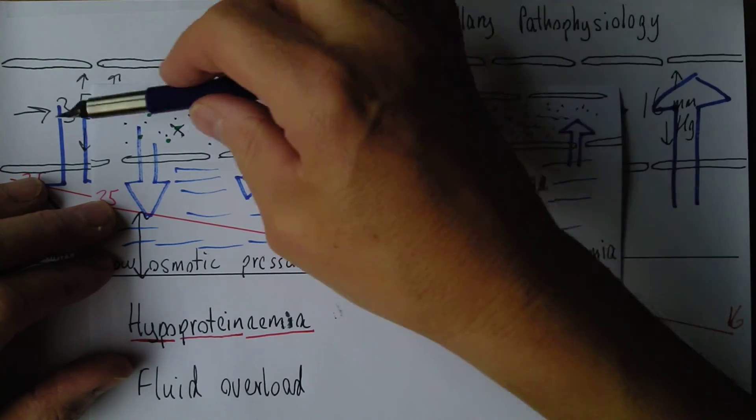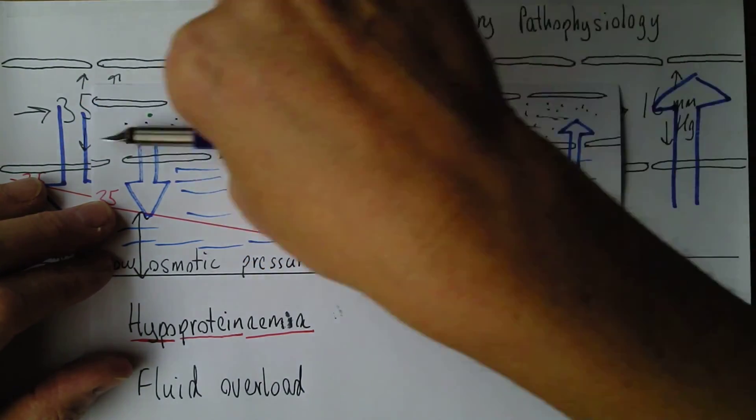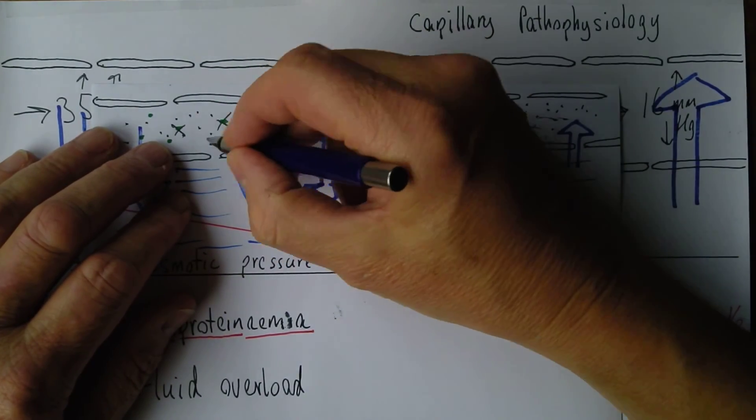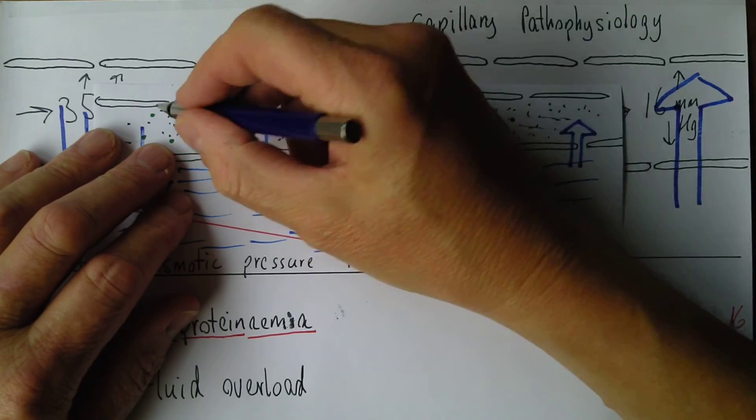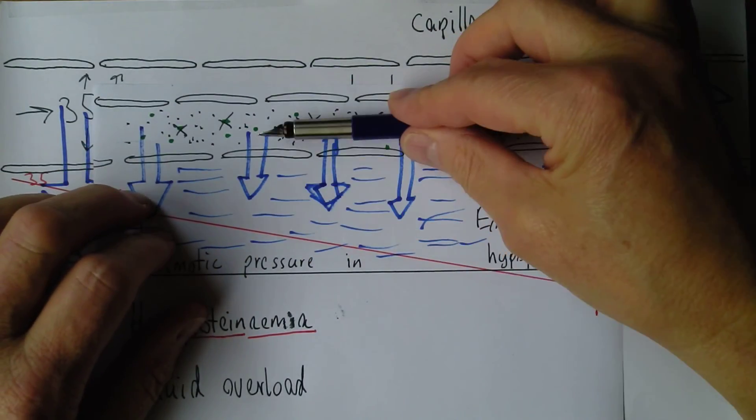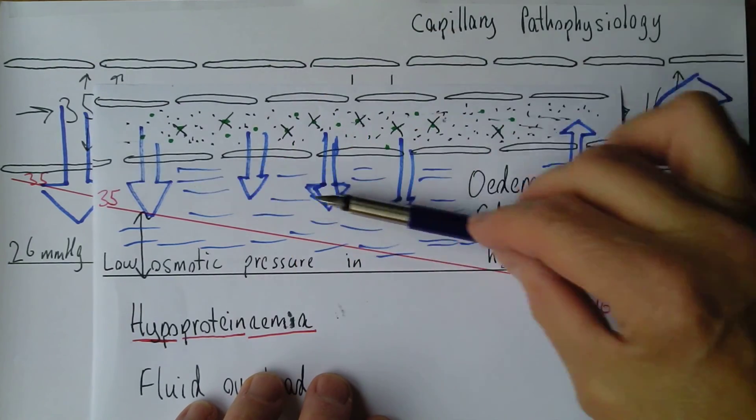But if you get too much intravenous fluid, then the water is going to over dilute the plasma proteins. And that means for a given volume of blood, you've got less oncotic pressure sucking back in. That means fluid can accumulate in the tissues.